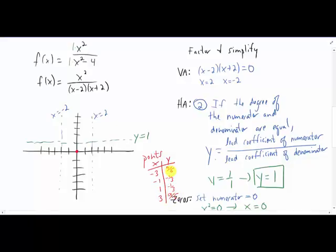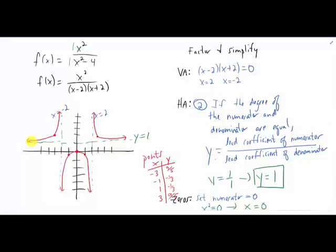Nine-fifths is just a little bit less than two, so that point is going to go in right there. The point negative one, negative one-third is going to be somewhere in that region. Positive one, negative one-third, is going to be somewhere there. And the point three, nine-fifths is going to be somewhere here. We know that our graph is going to approach our vertical asymptotes as x gets close to them. And as x gets really big, our graph approaches the horizontal asymptote. So there's a basic sketch of what this thing is going to look like.